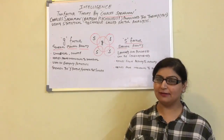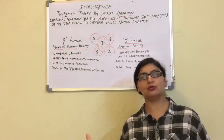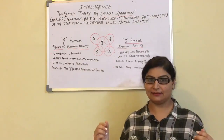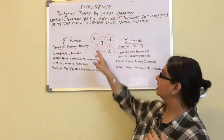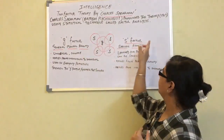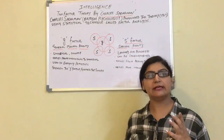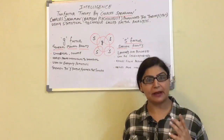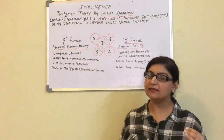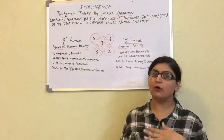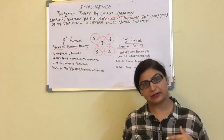Let us start with the two-factor theory of intelligence. What are these two factors? One is G-factor, the other is S-factor. G-factor stands for general intelligence, general mental energy. It is that mental capacity that you use in almost all your daily life activities.